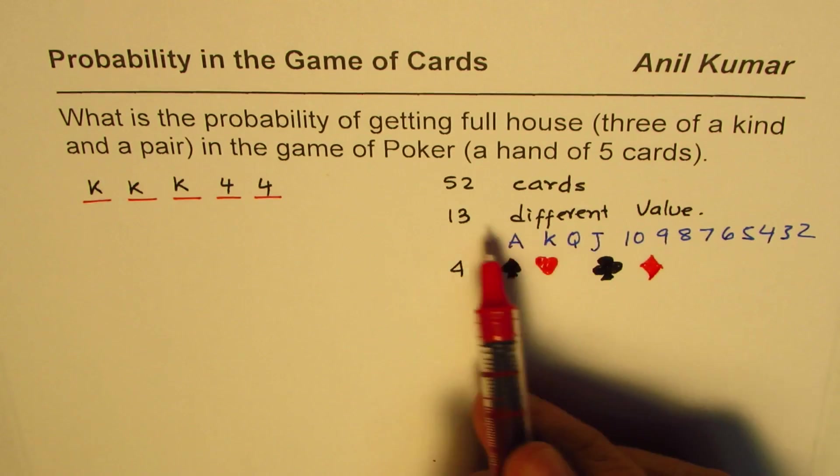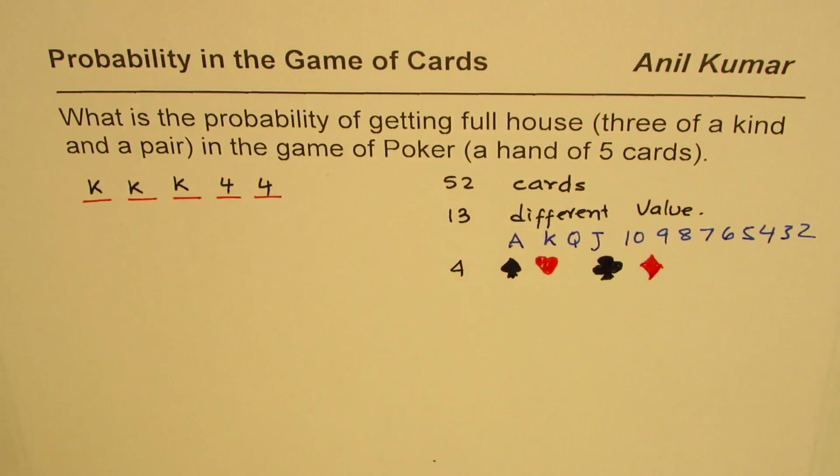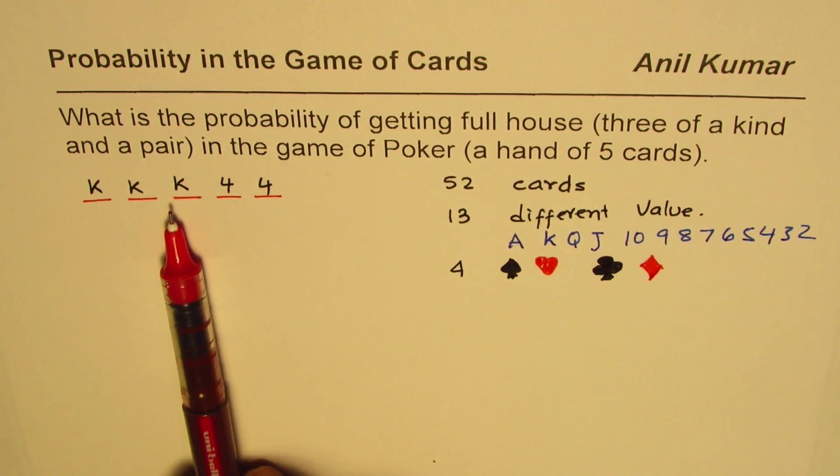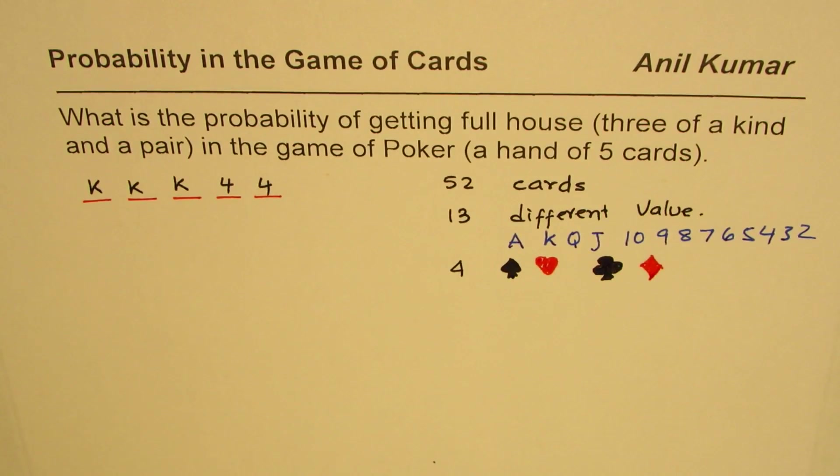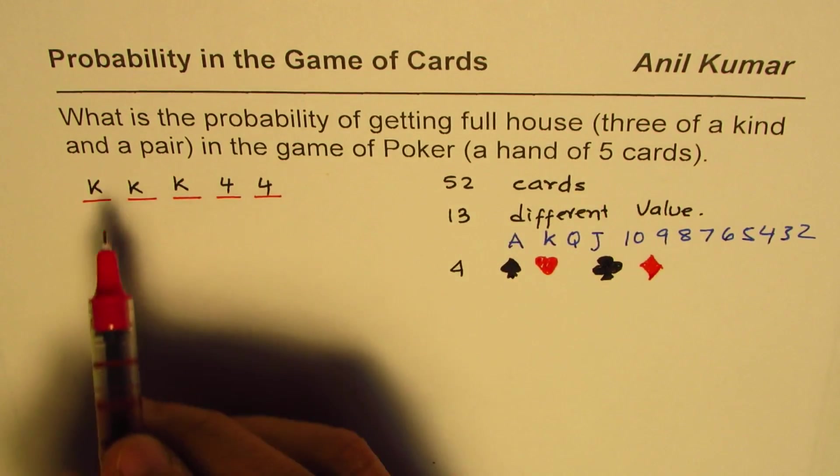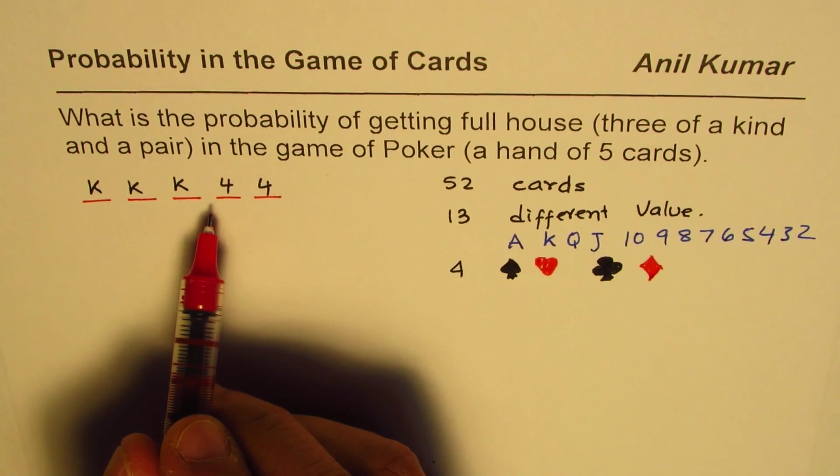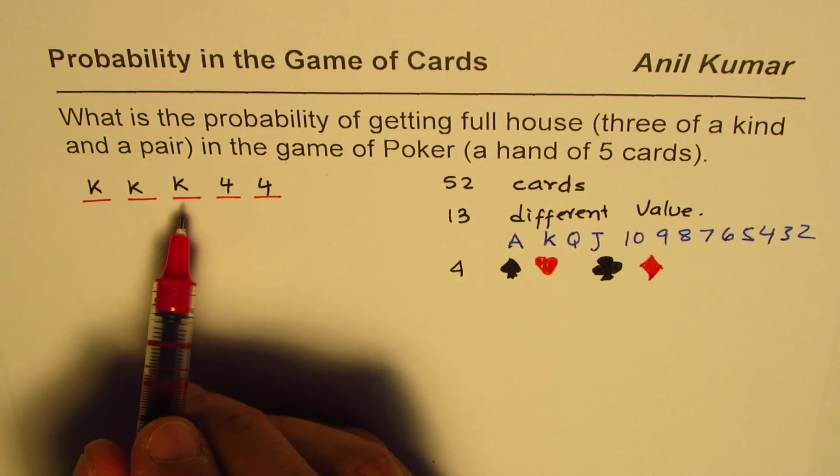So every card could be of four types. So that means 13 times 4 is 52, right? So that is how we have the distribution of cards. Now to solve this question we are looking for three of one kind and two of another kind. So let us see how to do this kind of equation.